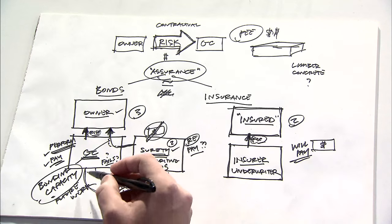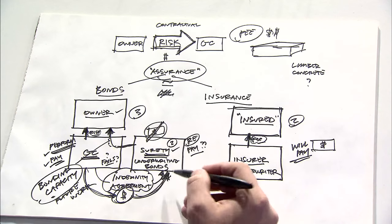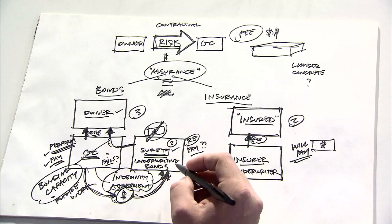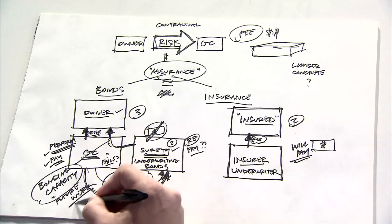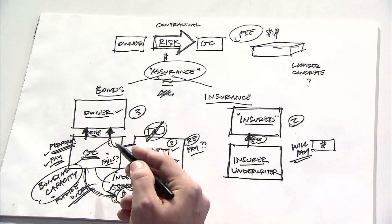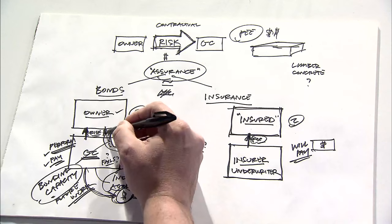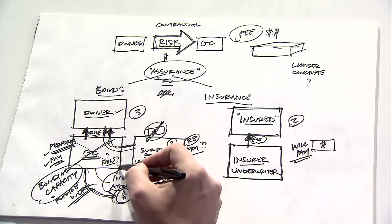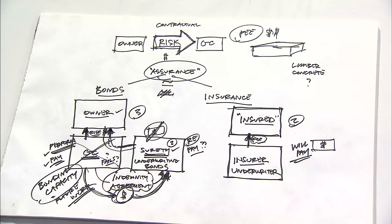And just because the indemnity agreement says that the contractor would have to pay them back, the contractor needs future work, so that by the time a project gets to be such that the surety actually has to make payment, then the contractor is in such poor shape that there's nothing liquid left for the surety to recoup through the indemnity agreement, which is the surety's greatest risk.